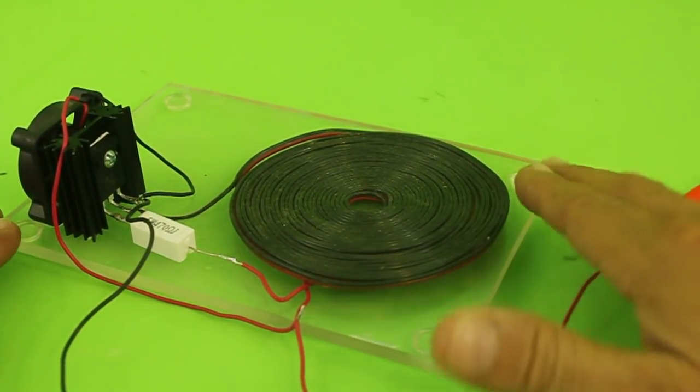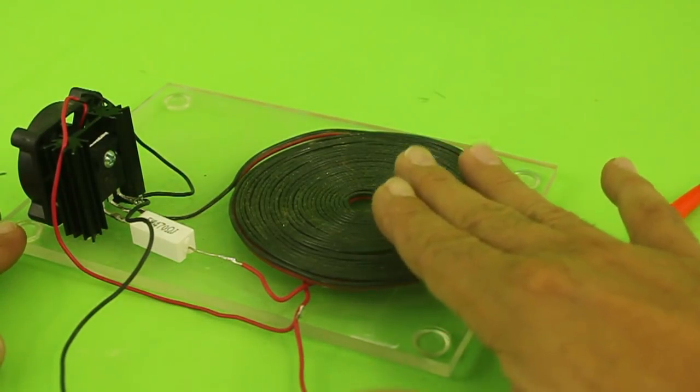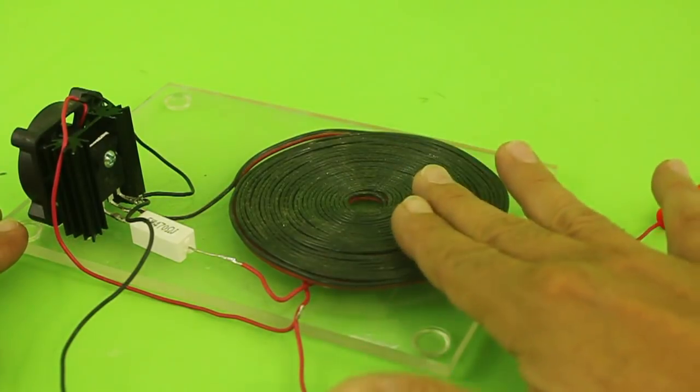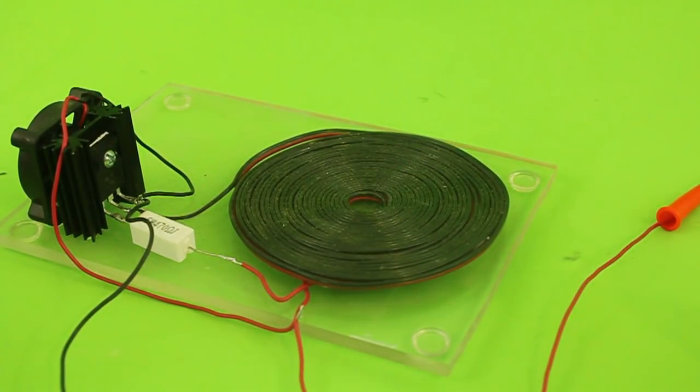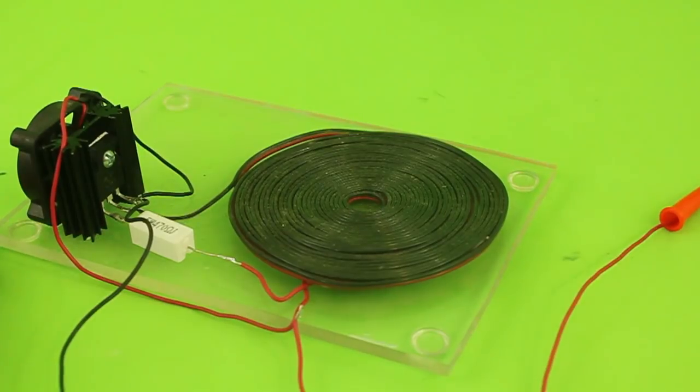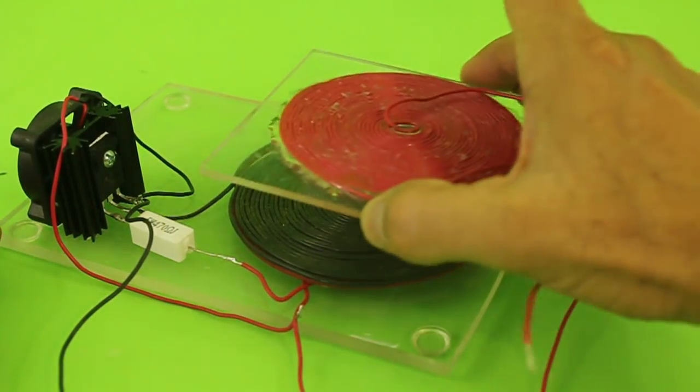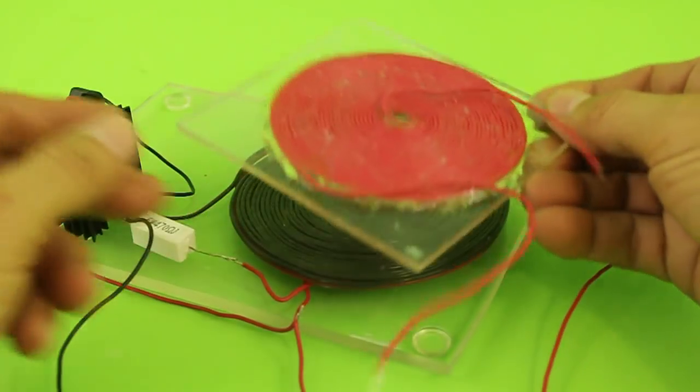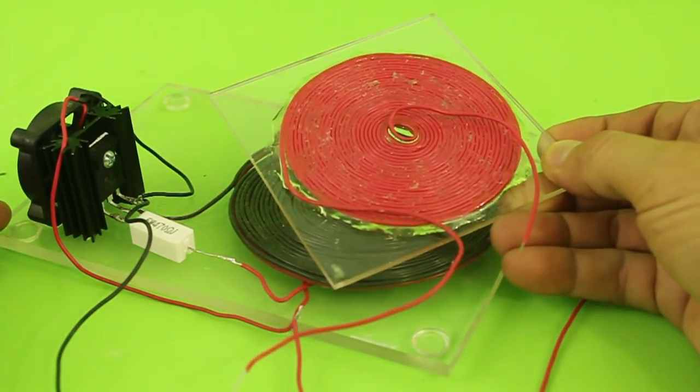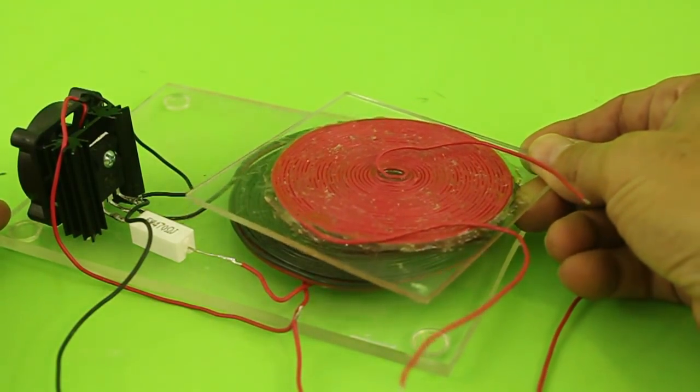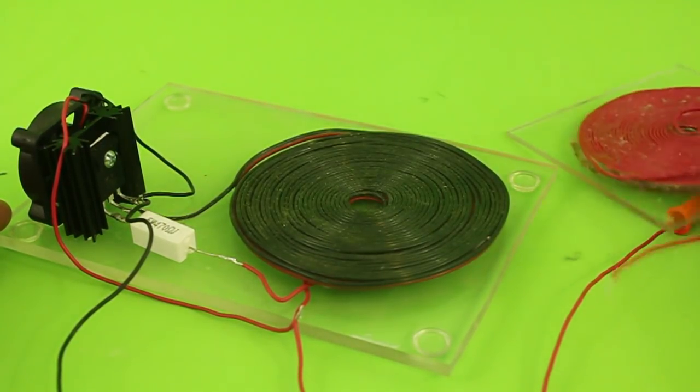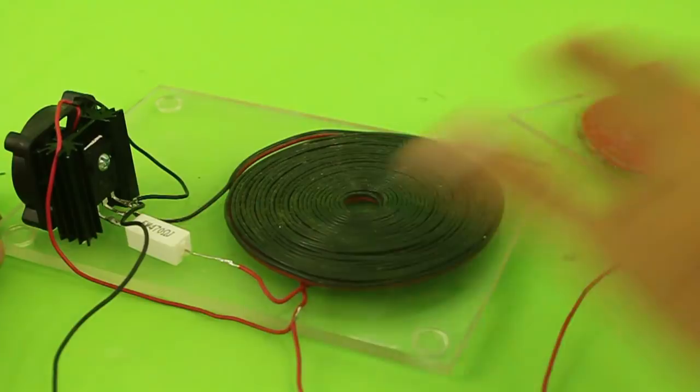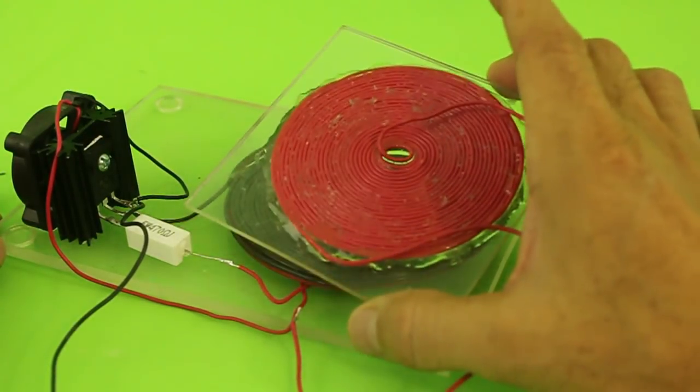So we will have a magnetic field that grows and then decreases following the AC current. And now when we place another coil, a receiving coil, near the emitting coil, in the receiving coil a voltage or current will be induced without contact. So we will transfer the electricity from the emitter coil to the receiver coil.